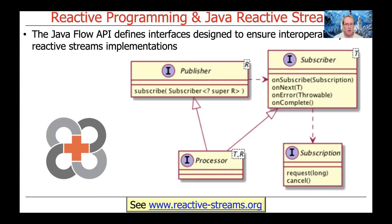We have something called a Subscription. When a subscriber is connected to a publisher, a subscription is created, and that can be used to indicate to the publisher how much data to send. It can also be used to cancel the subscription if the subscriber doesn't want to receive events anymore. Then there's another interface called a Processor, which implements both Publisher and Subscriber methods. And that's really all there is in the Flow API, which is part of Java 9 and the standard interfaces for the reactive streams model.